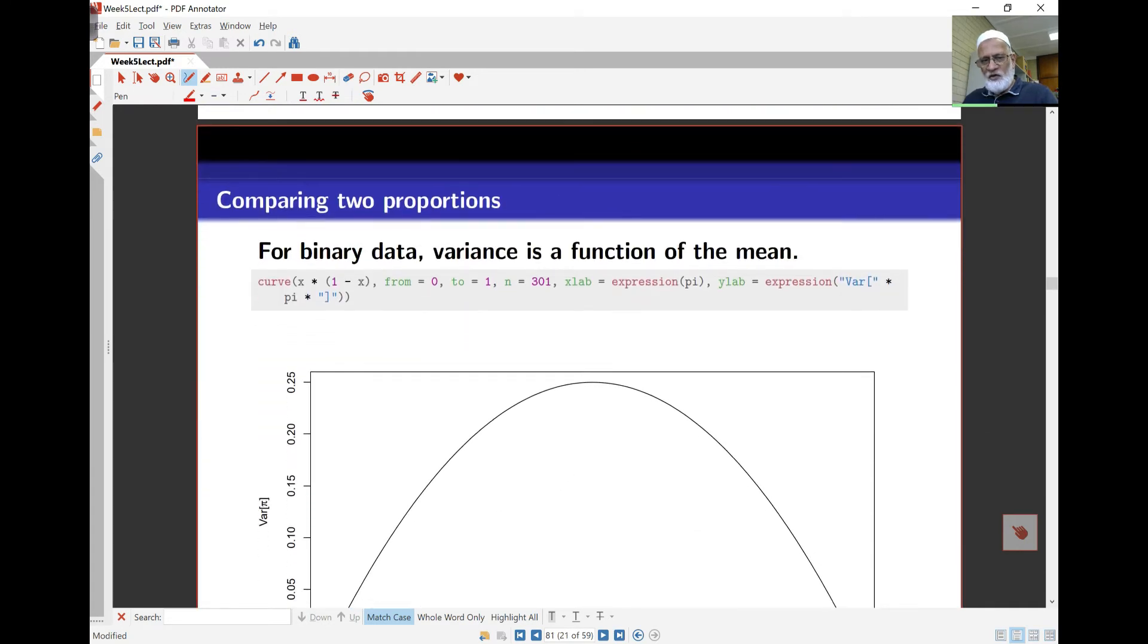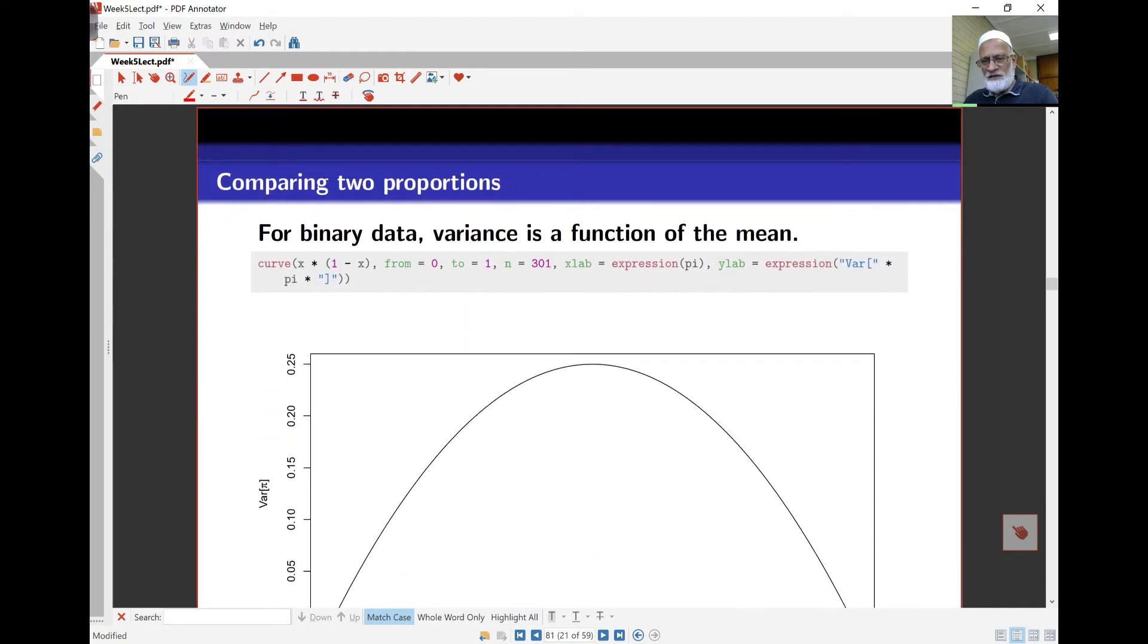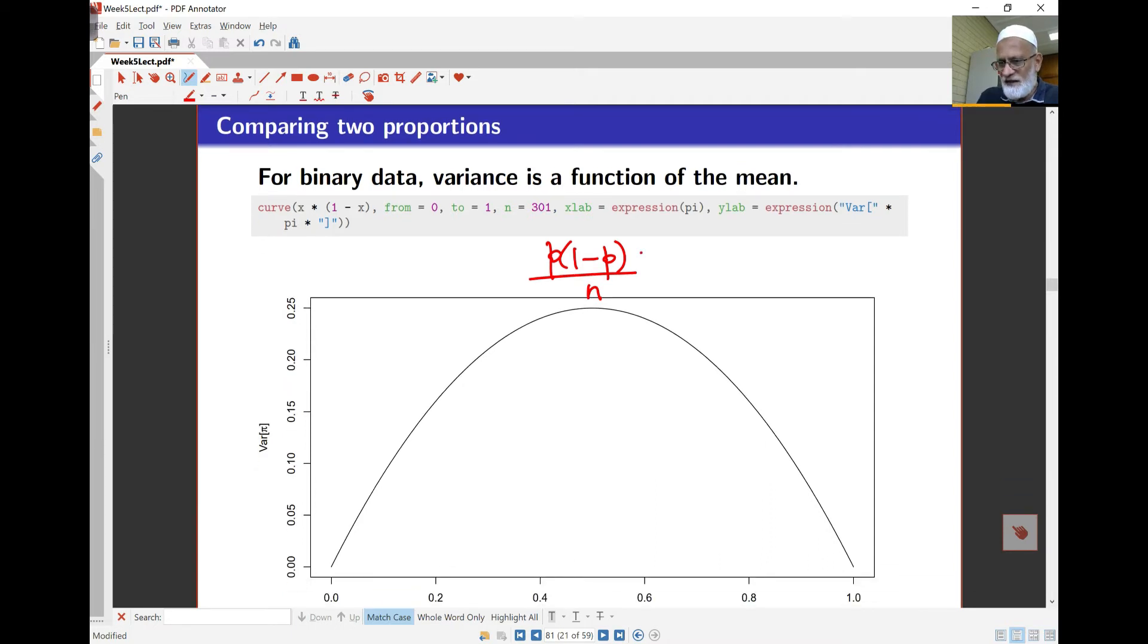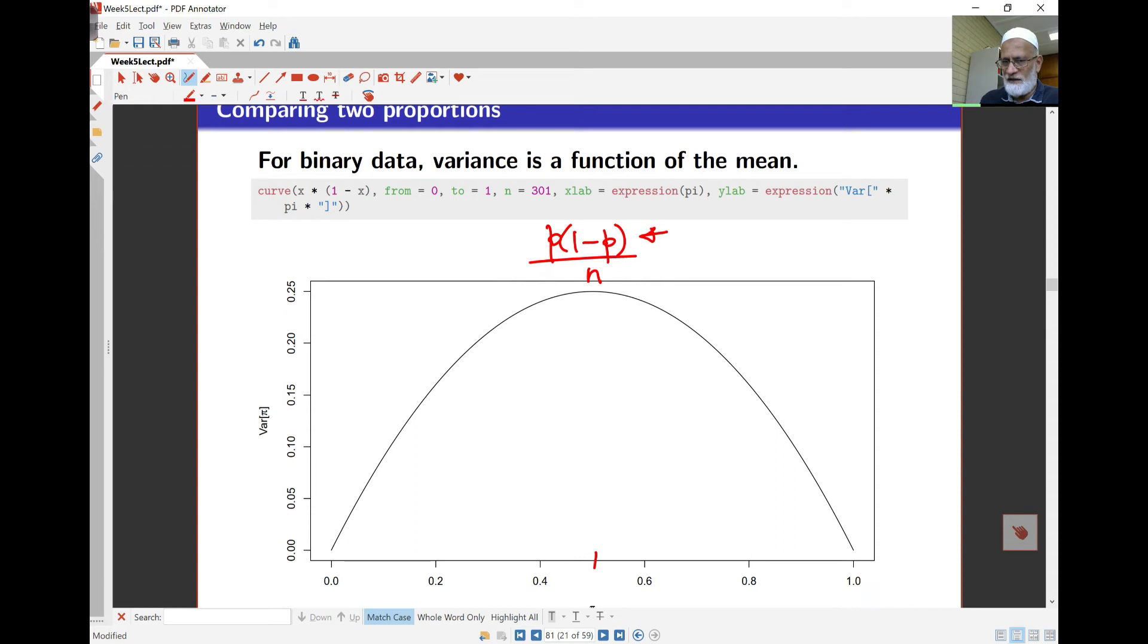For comparing two proportions, the idea here is that one of the issues is, if you take a look at this idea of proportion P hat times 1 minus P hat over N, the variance of the sample proportion, the problem we saw earlier is this thing is largest in the middle near 0.5 and small at the ends. So you can see the variance here depends on where you are.